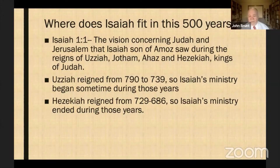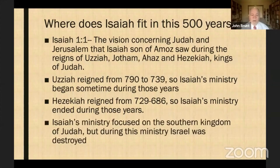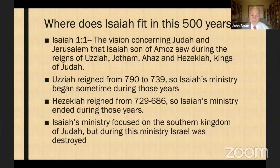We don't really hear much after 701-700, so people presume that Isaiah's ministry ended somewhere around 700 to 698. His ministry focused on the southern kingdom of Judah, though he did speak to the northern kingdom and predict that they would be destroyed. And indeed, it was during his ministry — in 722 — that the northern kingdom was destroyed.